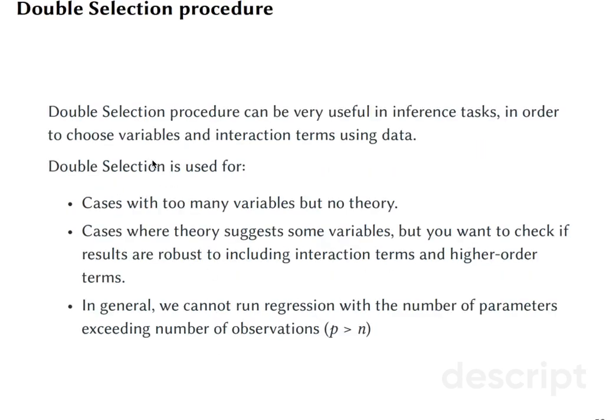In this course, you are learning to search for good functional forms in a data-driven manner. You looked at how double selection procedure can help us in searching for functional forms. Double selection can be especially useful when you have cases with too many variables but too little theory, cases where theory suggests some variables but you don't know whether to include interaction terms or not, or some higher order polynomials of those terms.